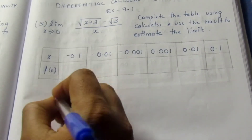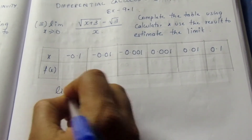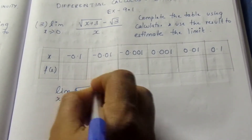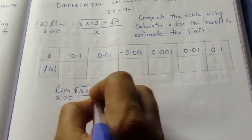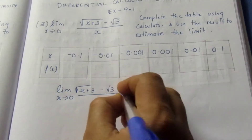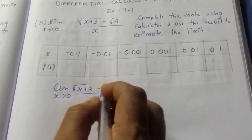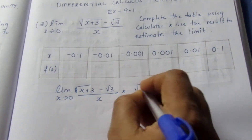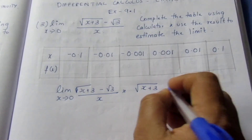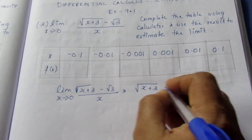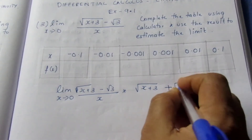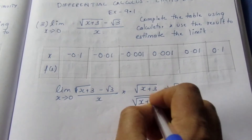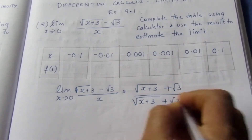Limit x tends to 0, root of (x plus 3) minus root 3, divided by x. We will use the conjugate — we will multiply by the opposite sign. We will multiply by root of (x plus 3) plus root 3 in both numerator and denominator.